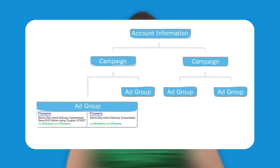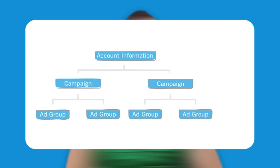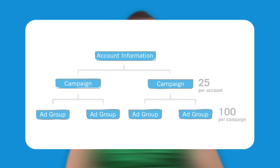Successful advertisers tend to organise many small, highly targeted ad groups around their products or services. The AdWords account structure gives you the versatility to run one ad on a few keywords, or up to 25 campaigns with up to 100 ad groups each, all sharing the same campaign settings, containing hundreds of ads and thousands of keywords.